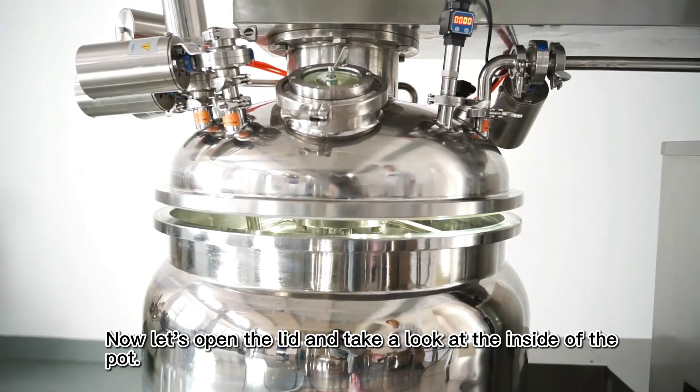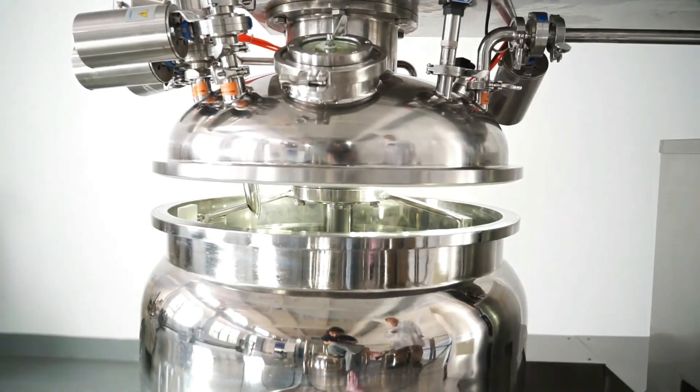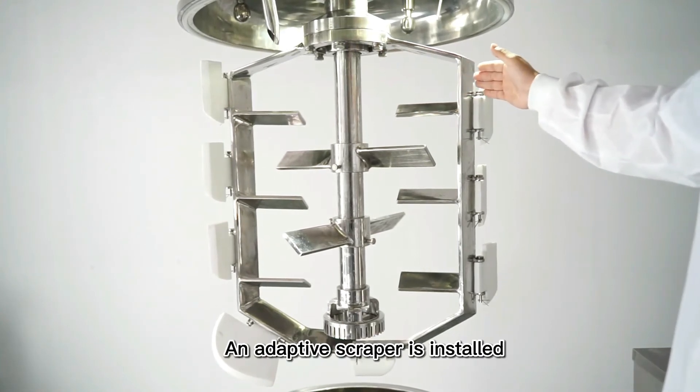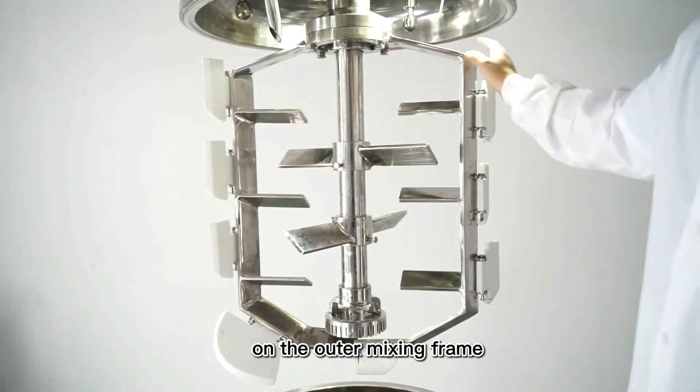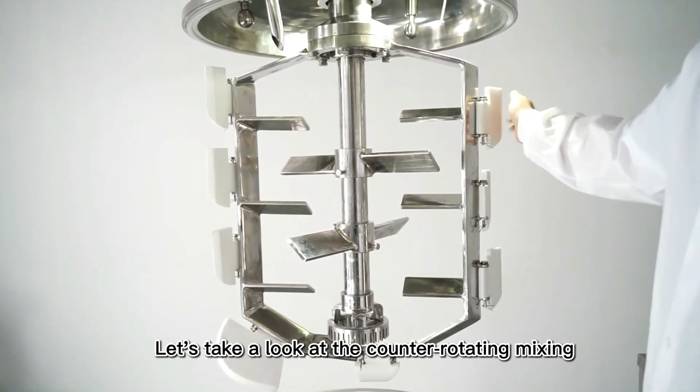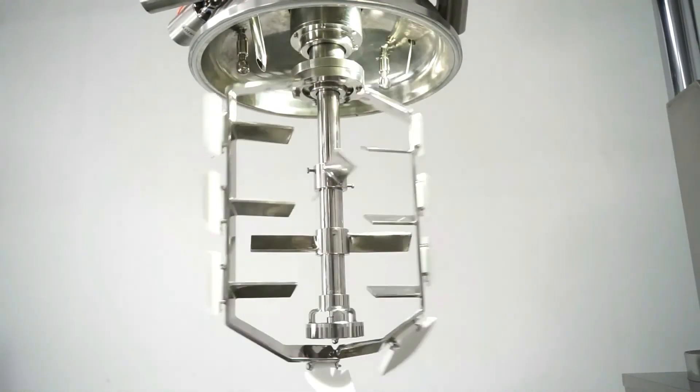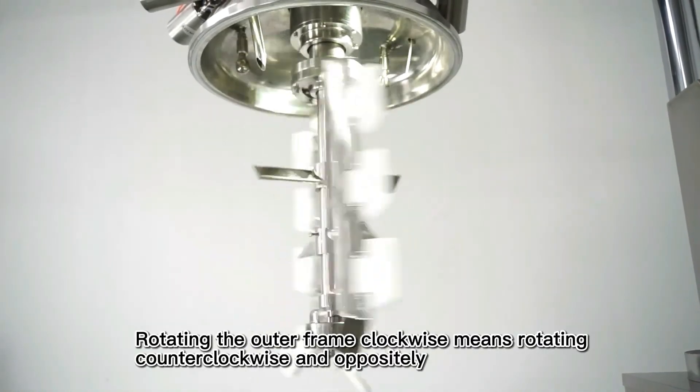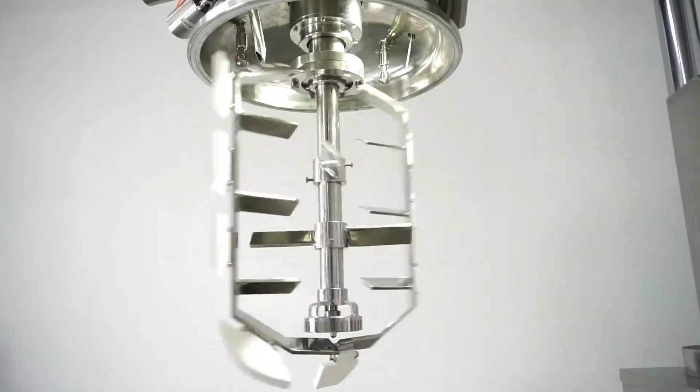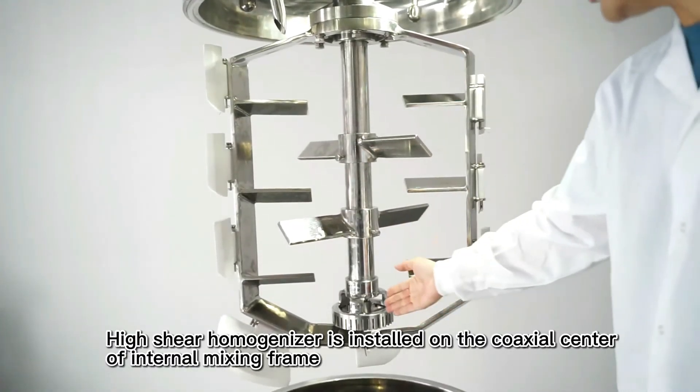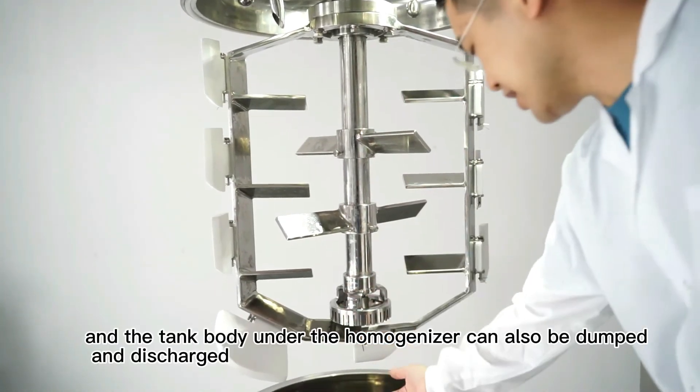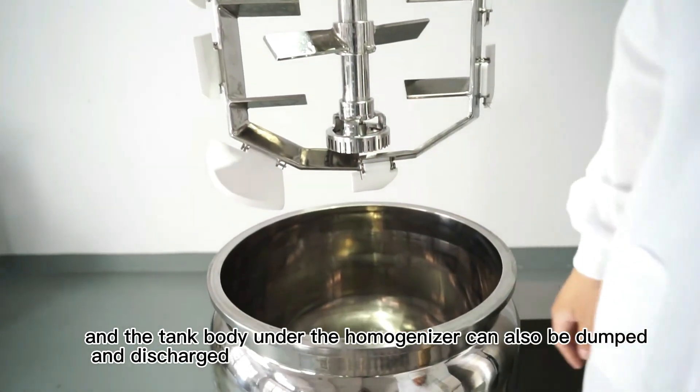Now let's open the lid and take a look at the inside of the pot. The inner mixing frame employs a counter-rotating structure. An adaptive scraper is installed on the outer mixing frame. Let's take a look at the counter-rotating mixing. Rotating the outer frame clockwise means rotating counter-clockwise and oppositely. A high shear homogenizer is installed on the coaxial center of the internal mixing frame, and the tank body under the homogenizer can also be dumped and discharged.